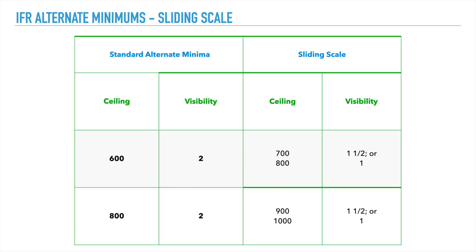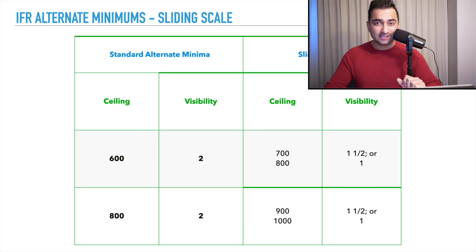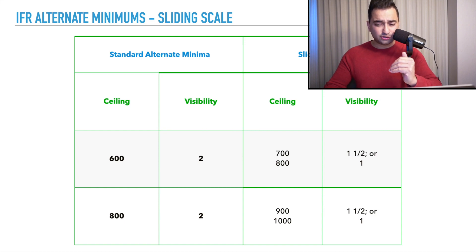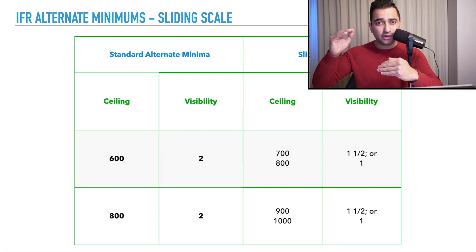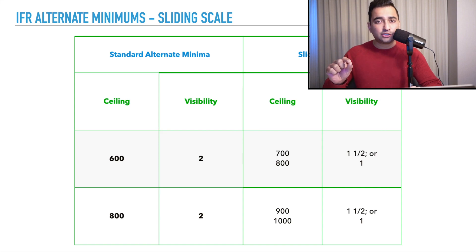Another name for the sliding scale is standard alternate minimum. Looking at the sliding scale, if we have a ceiling of 600 and a visibility of two, we can also have a ceiling of 700 feet but visibility drops to one and a half statute miles, or a ceiling of 800 feet with visibility of one statute mile. It gives you flexibility where a higher ceiling trades off half a mile of visibility each time. On your exam, look for these little tricks — the answer may even include the sliding scale as part of it, so just take your time with it.